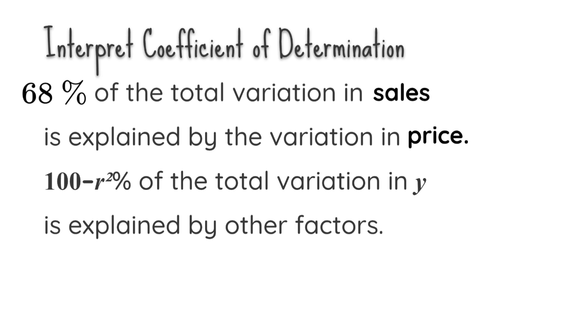100 minus r squared percent, which is 100 minus 68, is 32% of the total variation in sales, is explained by other factors.